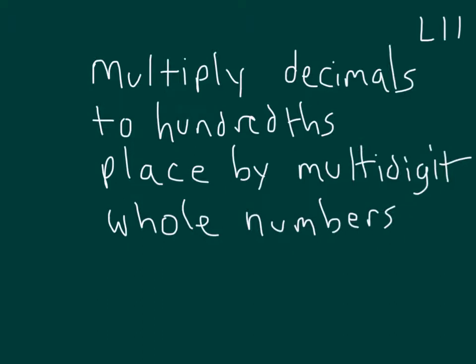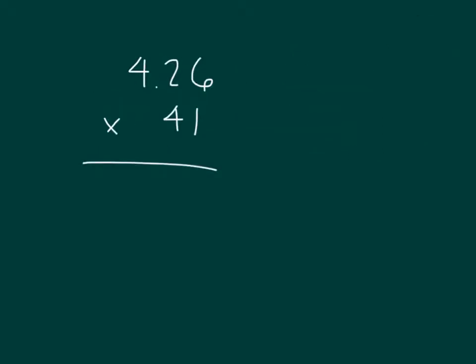Within this lesson, we'll work with multiplying decimals to the hundredths place by multi-digit whole numbers. Let's start with this first problem. We have 4.26 times 41. That's 4 and 26 hundredths times 41.